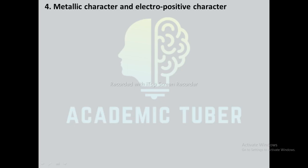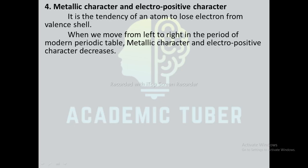Next one is metallic character and electropositive character: it is the tendency of an atom to lose electrons from the valence shell. When we move from left to right in a period of the modern periodic table, metallic character and electropositive character decrease.